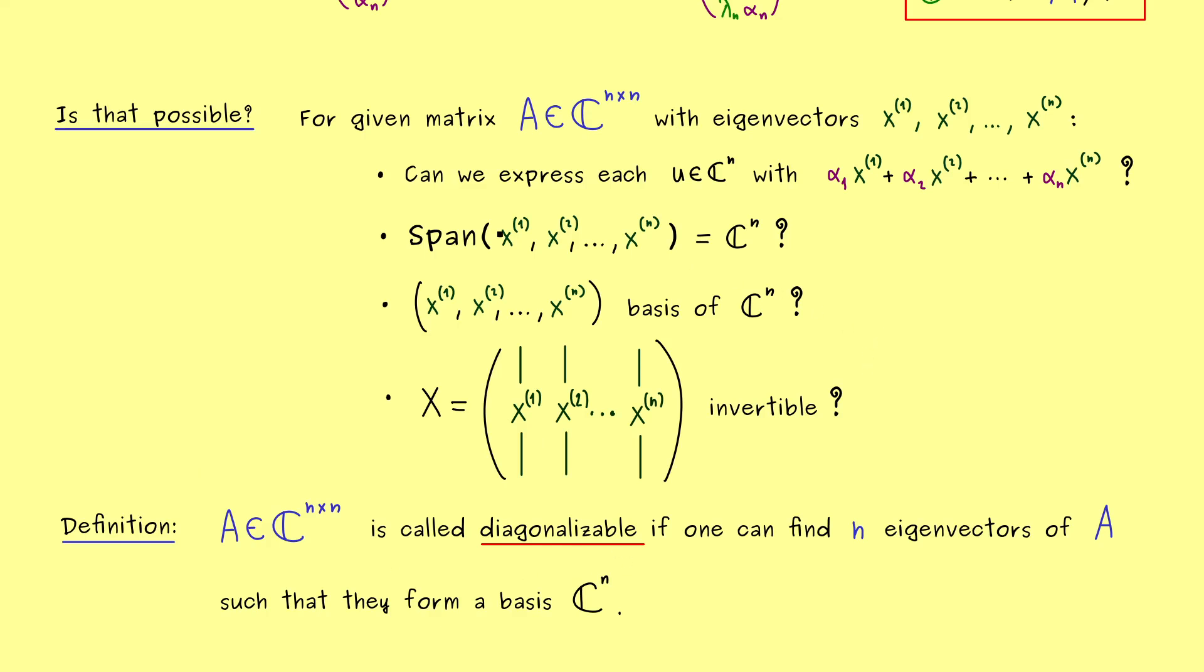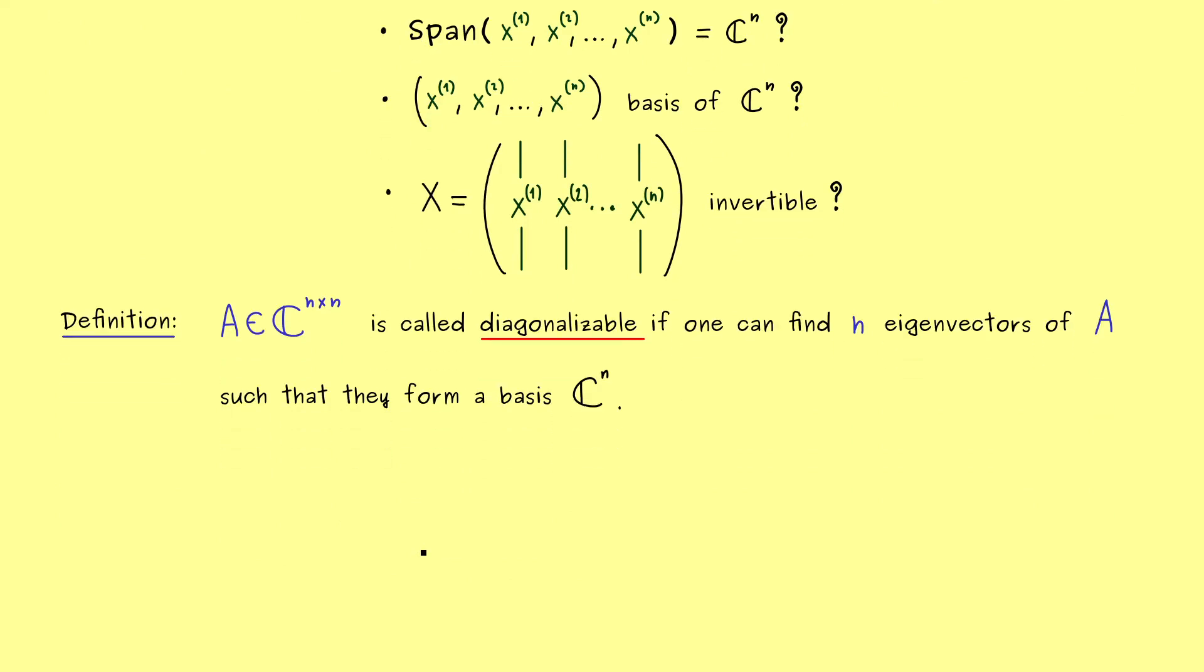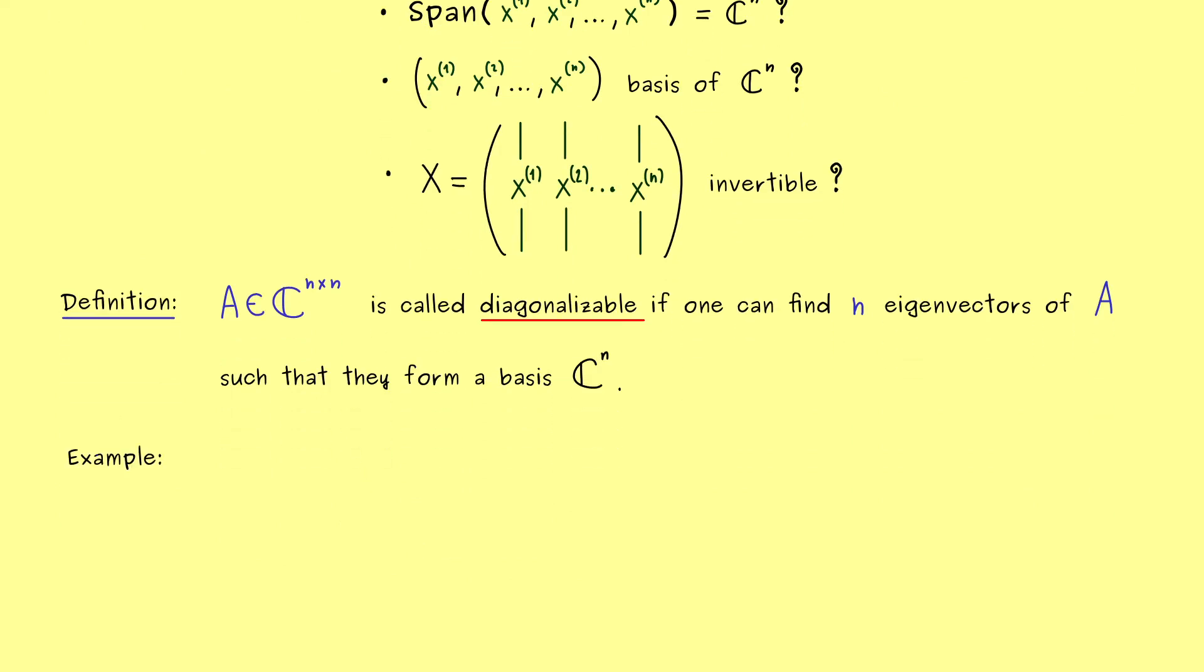Now, by the equivalence of the questions above, we could choose any statement there, but usually we choose the one with the basis. This means one has to find n eigenvectors of A such that they form a basis of the whole space C^n.